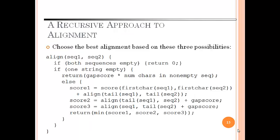Now second is the recursive approach to alignment. We are going to choose the best alignment based on three possibilities. We will align sequence 1 and sequence 2. If both sequences are empty then the function will return 0. If one string is empty then return GAPSCORE multiplied by the number of characters in the nonempty sequence. Else we will return score 1, the score of first character of sequence 1 and first character of sequence 2 plus alignment of tail of sequence 1 and tail of sequence 2. Similarly we will calculate for score 2 and score 3, and we will return the minimum of score 1, score 2, and score 3.